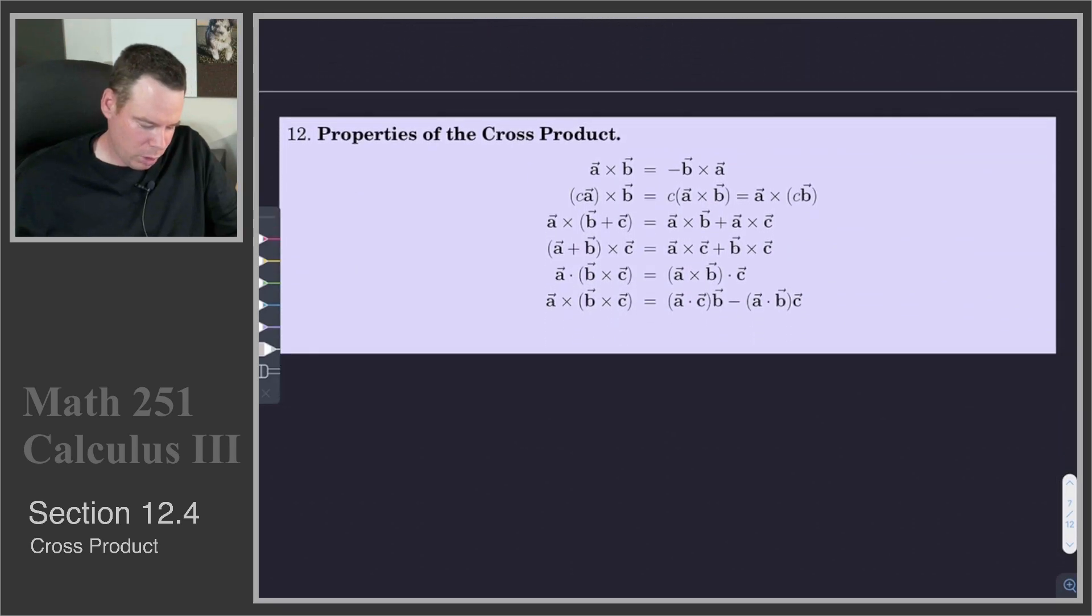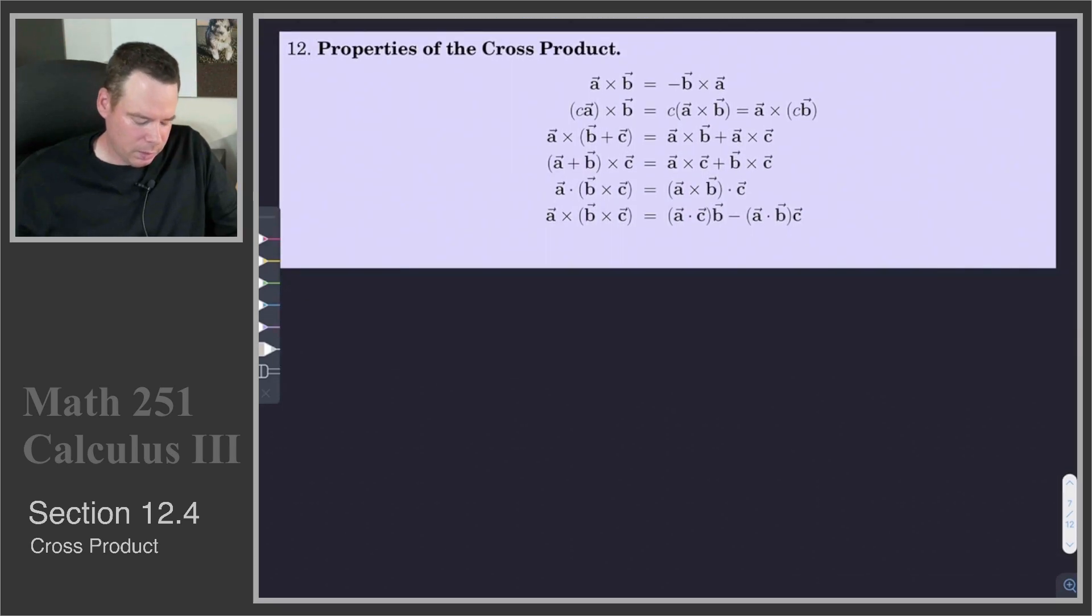Alright, so now we're going to look at just a few of the properties that the cross product has. So the cross product, it is order dependent.